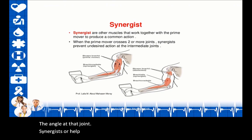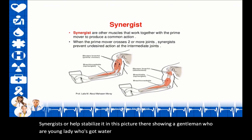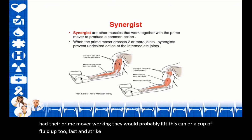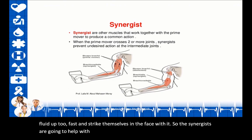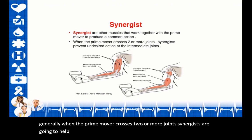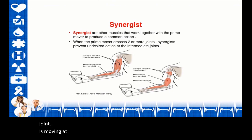Synergists help stabilize movement. When drinking from a cup, if only the prime mover worked, you'd lift it too fast and strike yourself in the face. Synergists help with the controlled movement. Generally, when the prime mover crosses two or more joints, synergists stabilize those joints so only one joint is moving at a time.